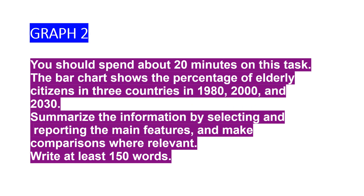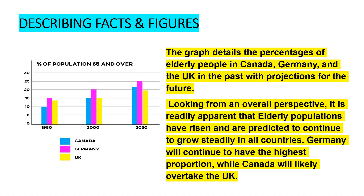Let's take a look at graph 2. You should spend about 20 minutes on this task. The bar chart shows the percentage of elderly citizens in three countries in 1980, 2000, and 2030. Summarize the information by selecting and reporting the main features and make comparisons where relevant. Write at least 150 words. This paragraph is describing facts and figures. The first paragraph: 'The graph details the percentages of elderly people in Canada, Germany, and the UK in the past with projections for the future.' Looking from an overall perspective, it is readily apparent that elderly populations have risen and are predicted to continue to grow steadily in all countries.